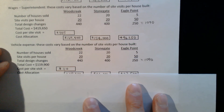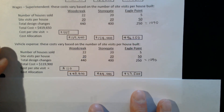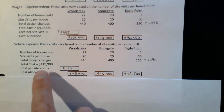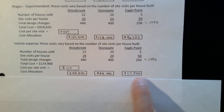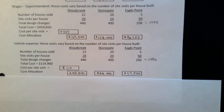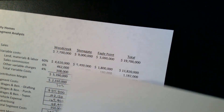Lastly, I look at vehicle expense, which is also based on the number of site visits to each home. I take my vehicle expense and divide by 1,090 visits to get $110 per visit — that covers tires, insurance, gas, and depreciation on the truck. Now that I've been able to apply overhead to these different neighborhoods, I can look at an income statement by neighborhood.